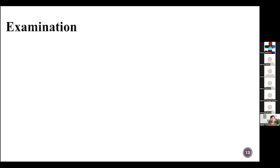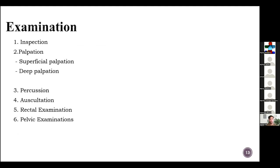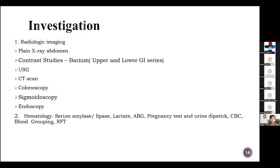Coming towards the examination part, we have divided it into six categories. First is inspection — we look at the abdomen and describe how it appears. Second is palpation — superficial and deep palpation. Then percussion and auscultation of the abdomen, mostly done for bowel sounds. We have rectal examination if required and pelvic examination. Investigation and radiological imaging is really important in cases of acute abdomen.